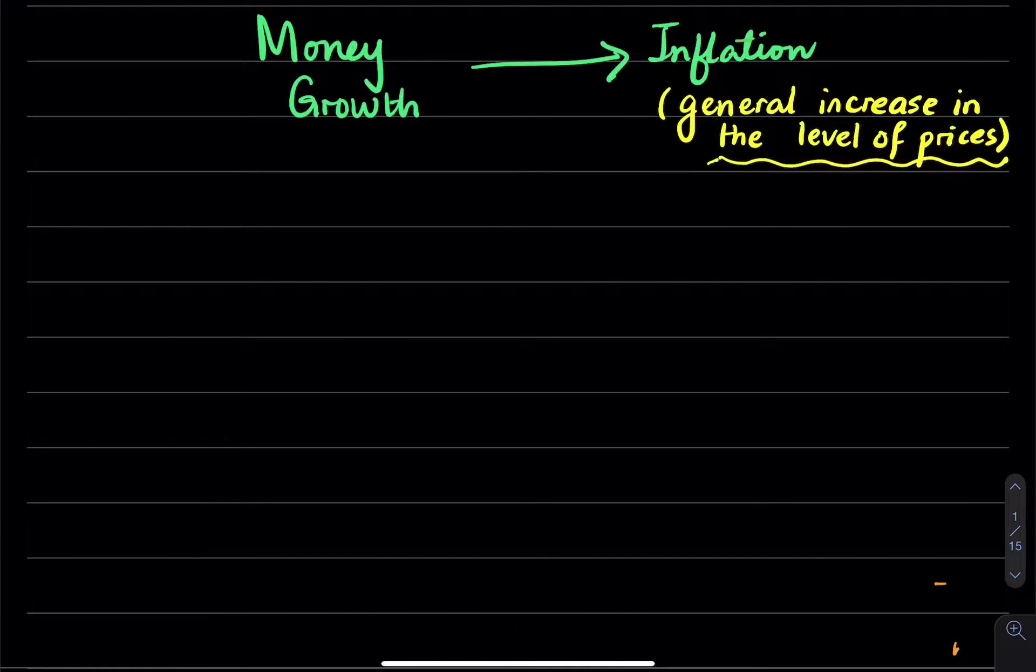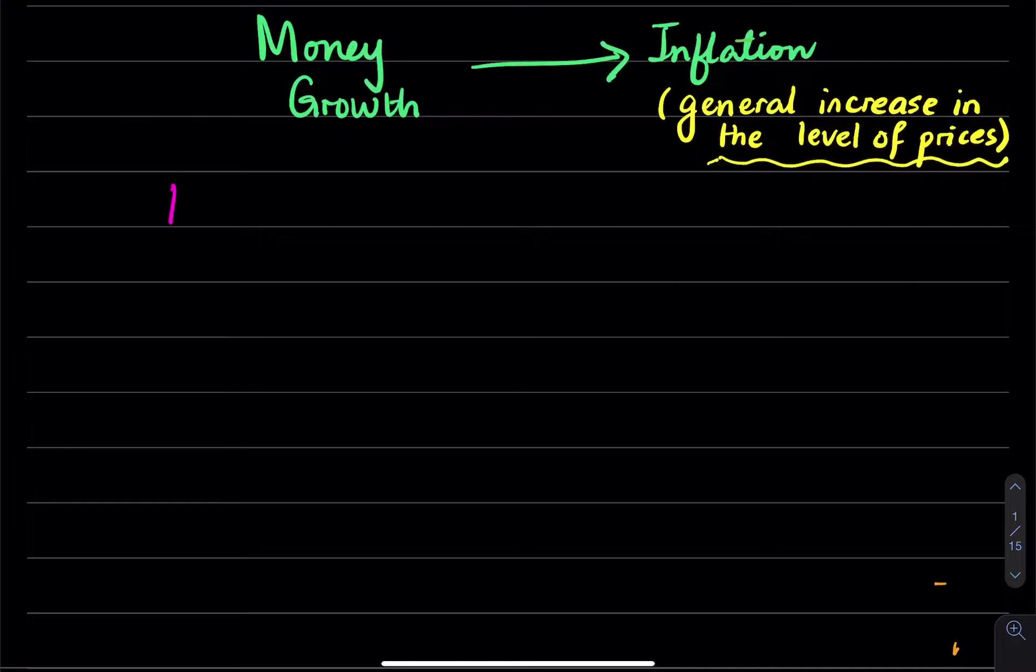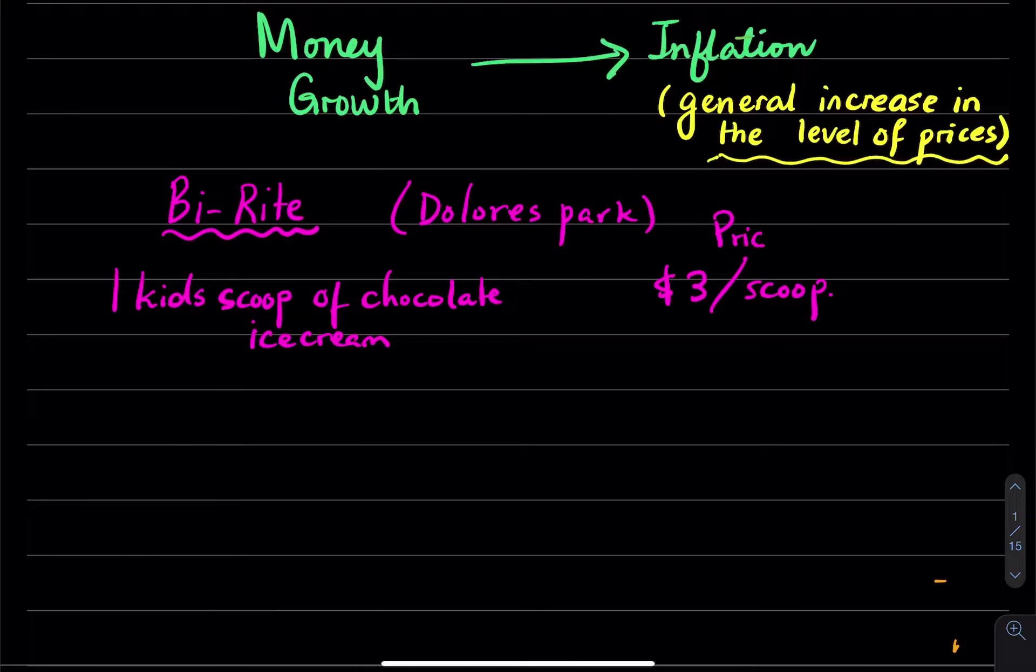And that it erodes the value of money. So let's take an example to illustrate this point. I really like to get ice cream at Byright. Byright is very close to Dolores Park. And I like to get one kid's scoop of chocolate ice cream, because I don't like to be feeling guilty about having ice cream. And that costs $3 per scoop.